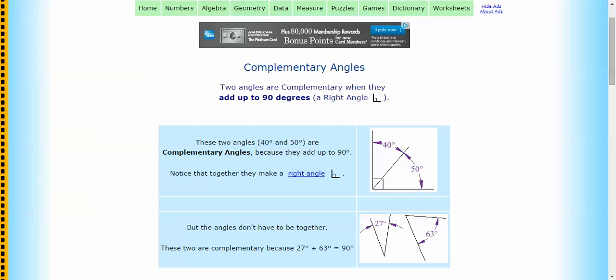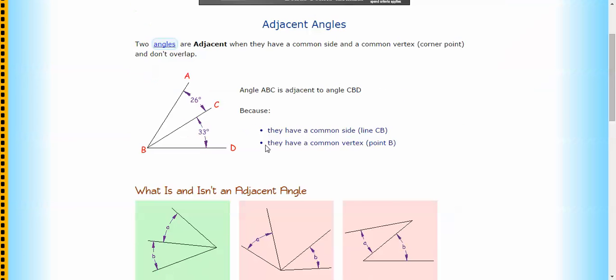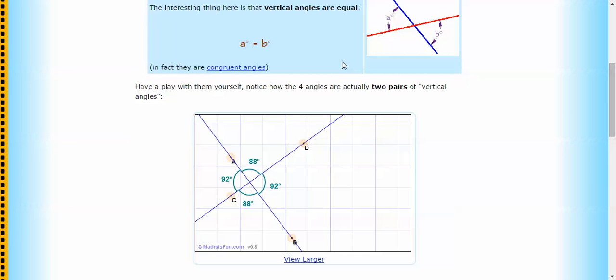So complementary adds up to 90, supplementary adds up to 180. Adjacent, sitting next to it, has to share the line, has to share the vertex where the angle is measured. And finally, vertical, which is opposite and equal. So I hope that's useful to you.